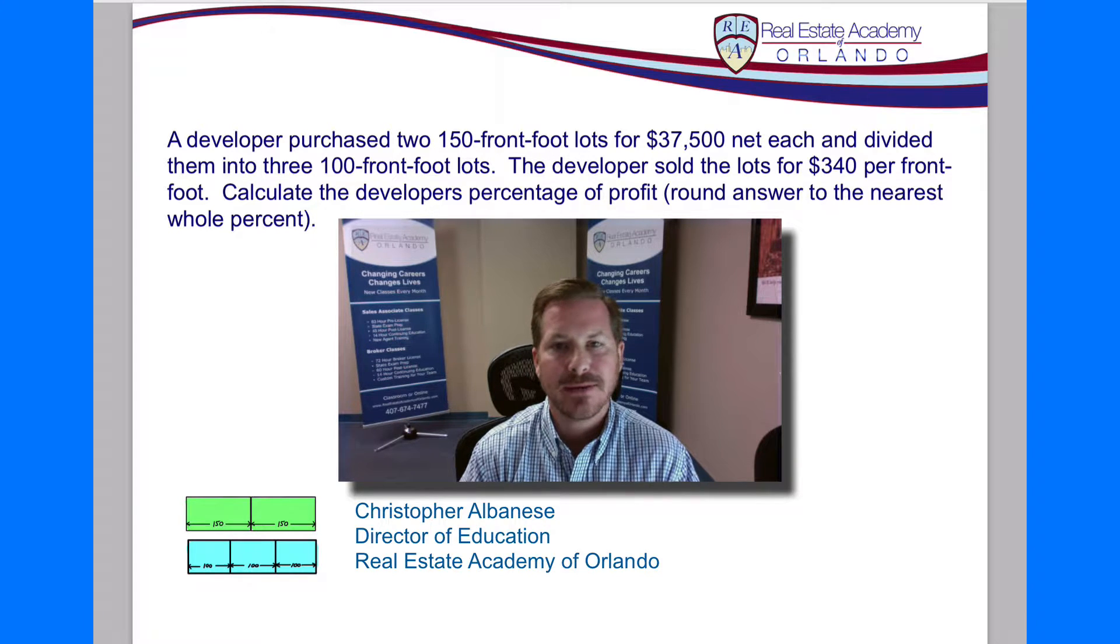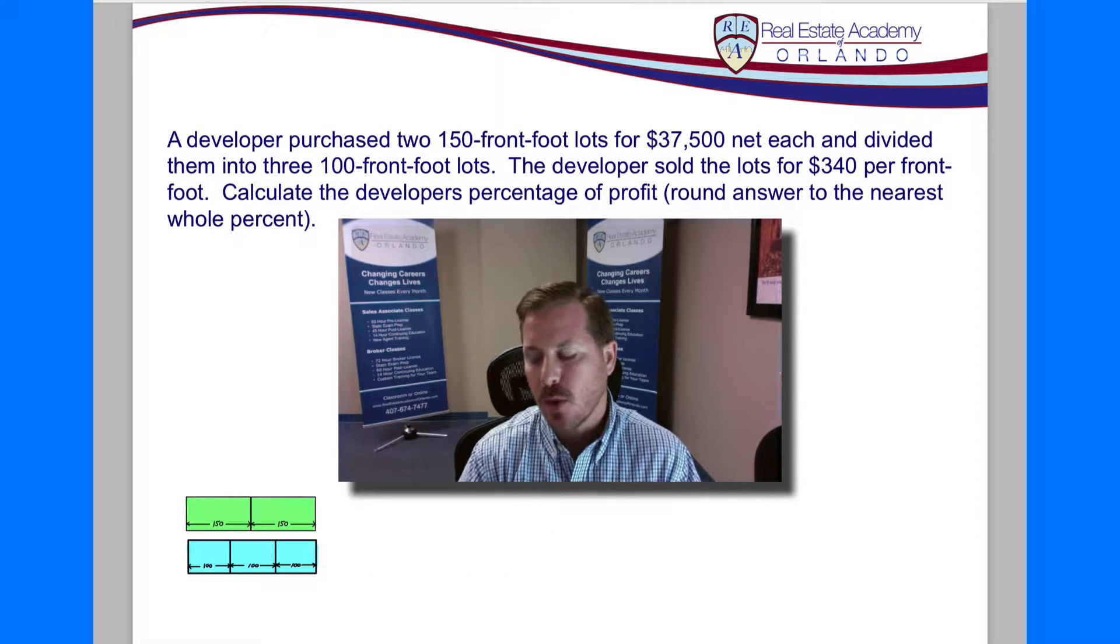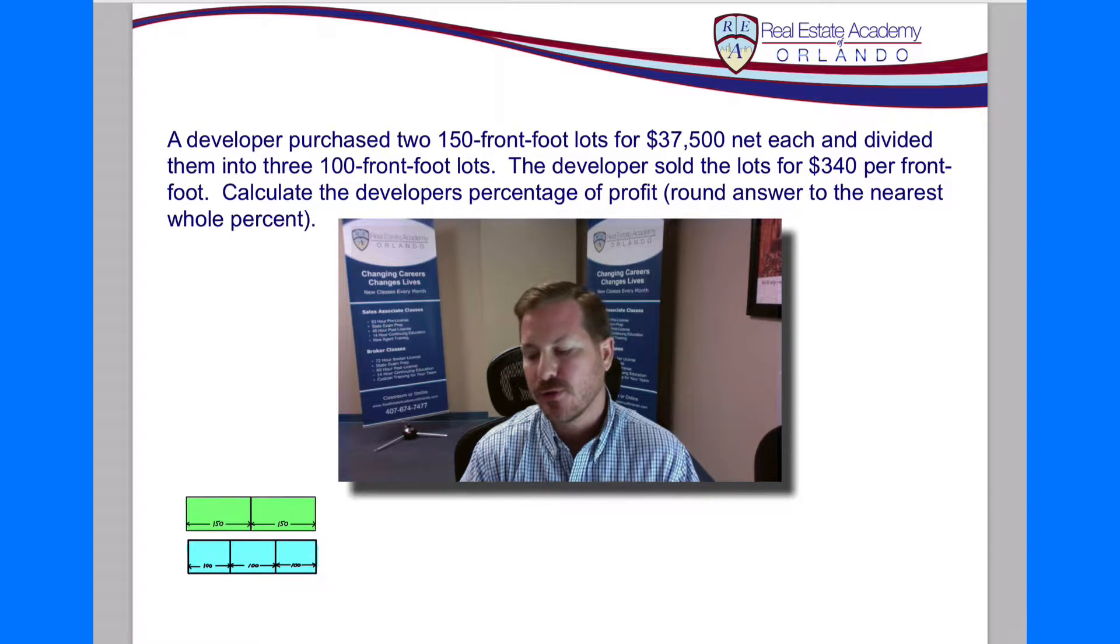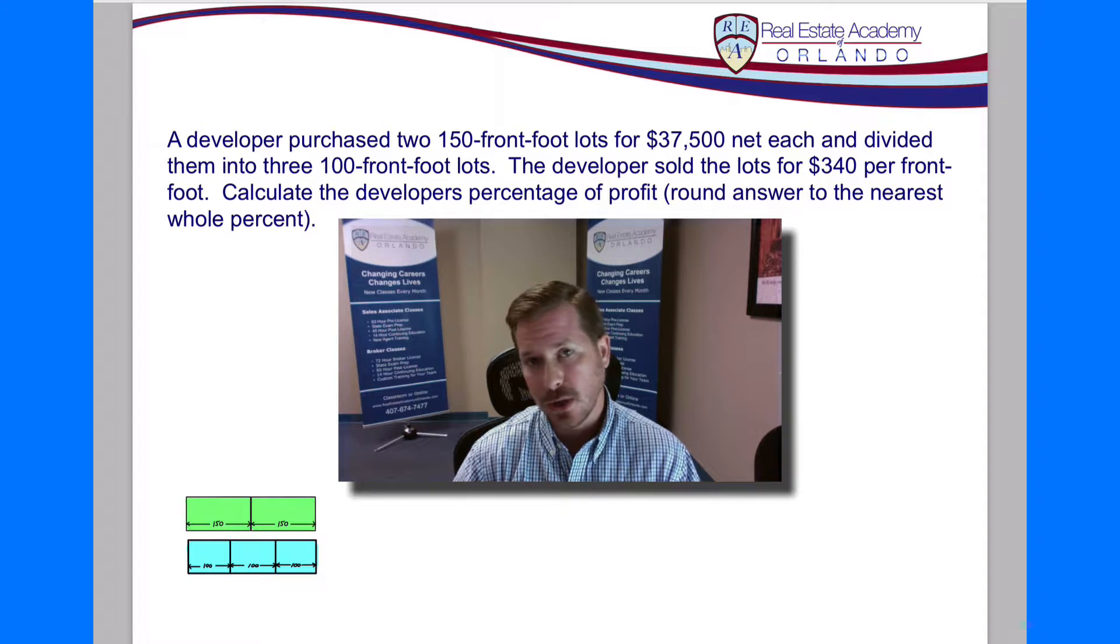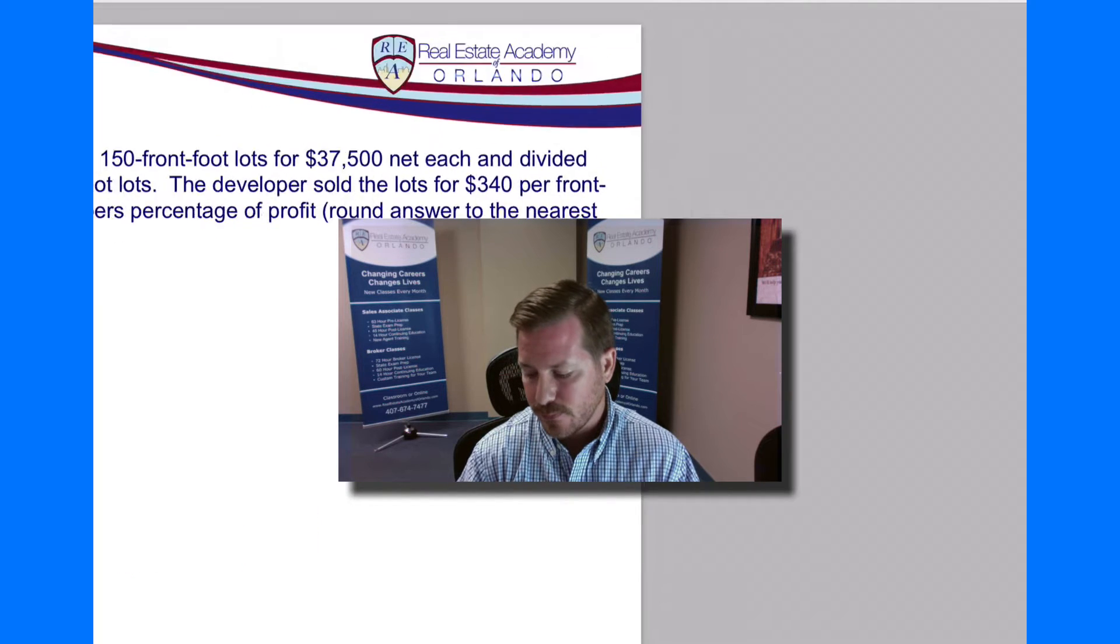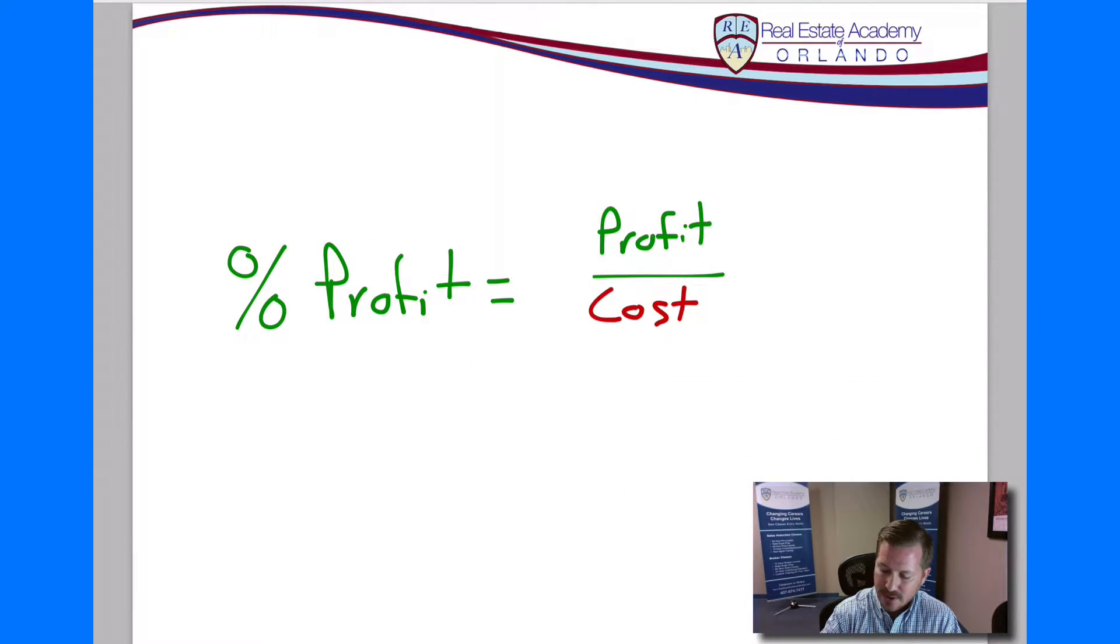The question we're looking at today is going to be a percentage profit question. Now, when we're calculating percentage of profit, this is generally a fairly simple step. All we have to do is take the total profit for whatever it is and divide it by the total cost, and that's going to give us our percentage of profit. So let's take a look at a simple formula here. Percentage of profit is profit divided by cost.